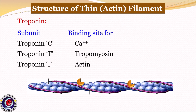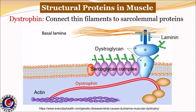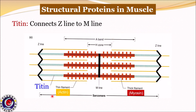So that was all about thick and thin filaments. These filaments are kept in position with the help of various structural or anchoring proteins. The first is dystrophin. It links actin filaments to proteins in the sarcolemma called dystroglycan, which in turn connects to the basal lamina in the endomysium via another protein called laminin. Dystrophin strengthens muscle fibers and protects them from injury. Deficiency of this protein is responsible for myopathies called muscular dystrophy.